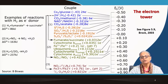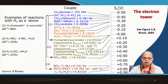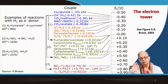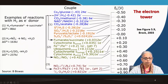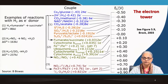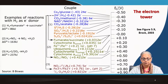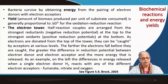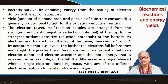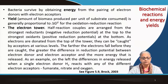There are hydrogen-utilizing bacteria that can use hydrogen as the electron donor and either fumarate, nitrate, or oxygen as the electron acceptors. Bacteria survive by obtaining energy from the pairing of electron donors with electron acceptors.